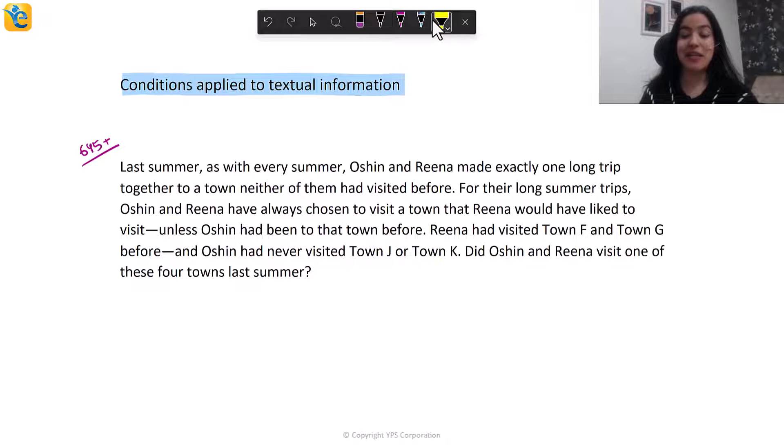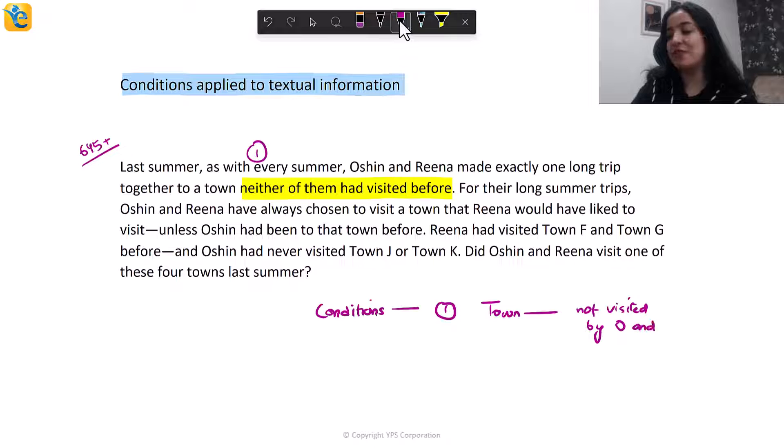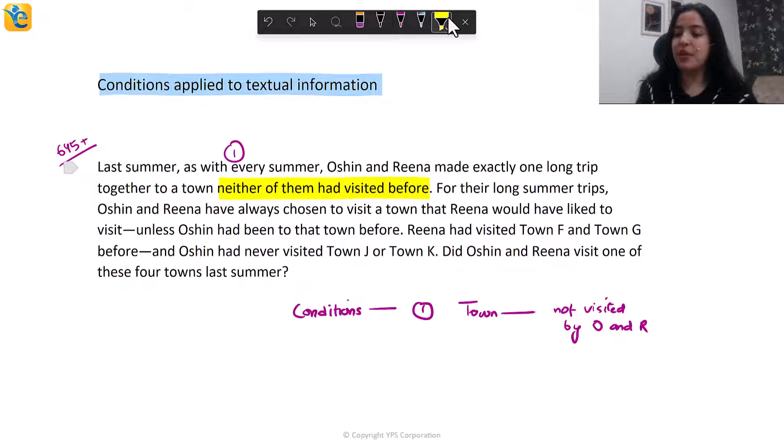Let's remove the statements and work on only the passage. Perfect. Here we go. Now let's start translating, writing our notes, creating our notes for the situation. First, this passage actually presents two conditions for the town that they visited last summer. What are those two conditions? First, it's a town neither of them had visited before. So if I write this condition down, condition one is that O and R have not visited this town. So let's write this in this way. We have the town and it is not visited by O and R. That's your first condition. Then when you read the question further, it says for the summer trips, they have always chosen to visit a town that Rina would have liked to visit unless Ocean had been to that town before. This is where you got your second condition.